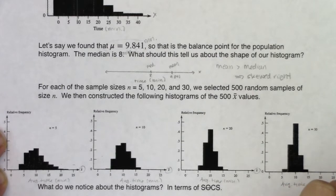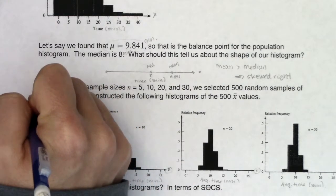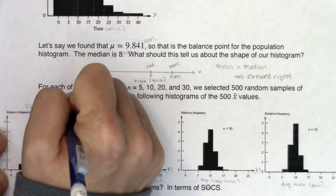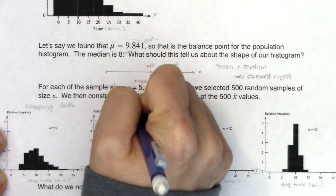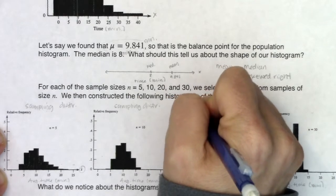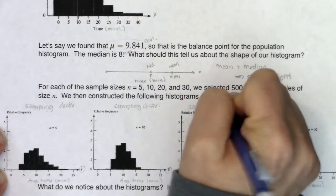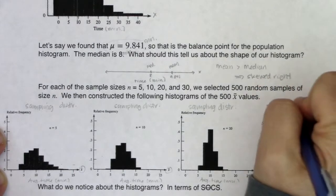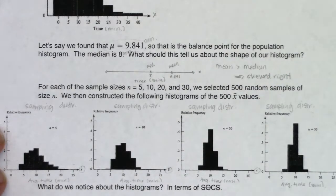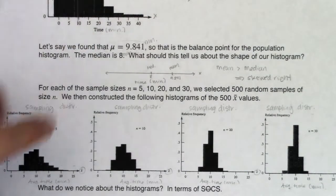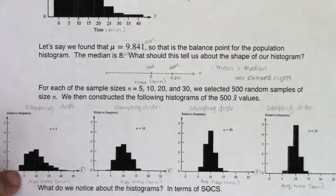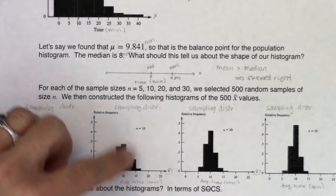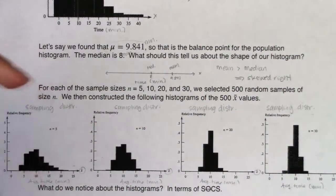These are all four sampling distributions. Up top I have the population distribution — that was all of the games. These below are graphs of the averages for sample size 5, sample size 10, 20, and 30. There are 500 data points in each sampling distribution, and I ran this off Minitab — you don't have that program nor do you need it.